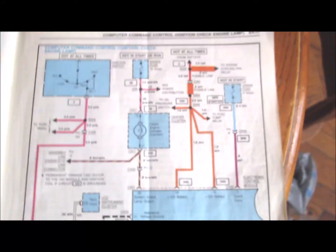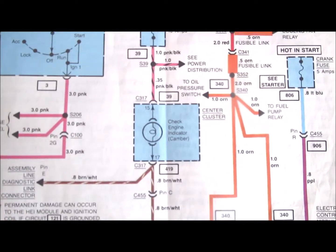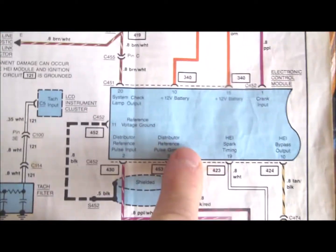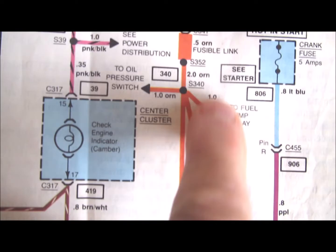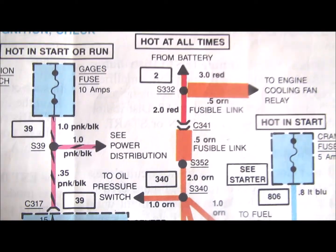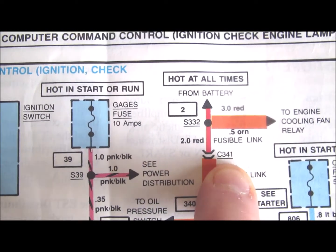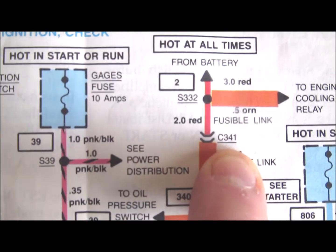This is just a quick video about this main fusible link that feeds the electronic control module. It's the red wire that comes off the battery. I'll go out to the car and show you the connector in a minute.